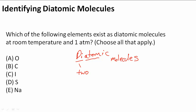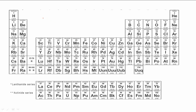Let's take a look at the periodic table and figure out which ones they are. One is H, hydrogen, which exists as H2. N is another one, then oxygen, fluorine, chlorine, bromine, and iodine. So all of those elements exist as two atoms when you find them in nature, and that's why we call them diatomic.